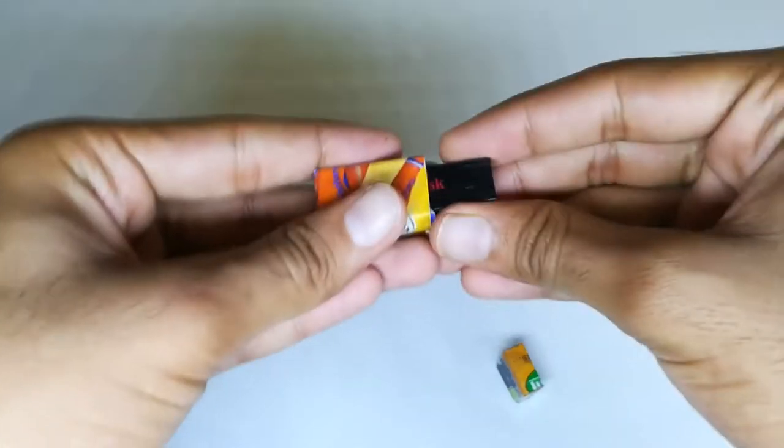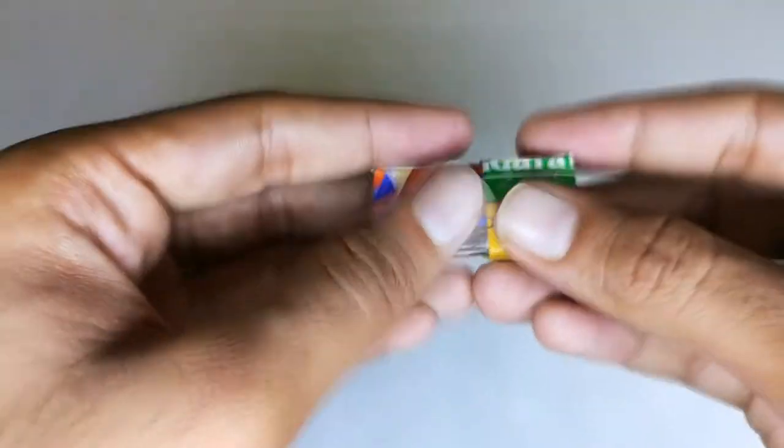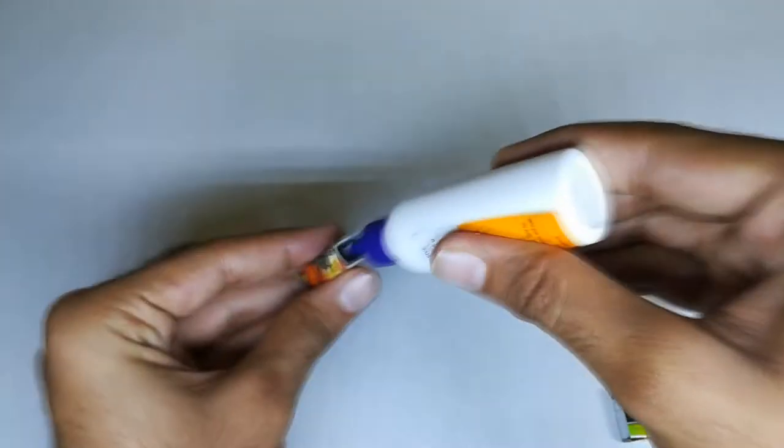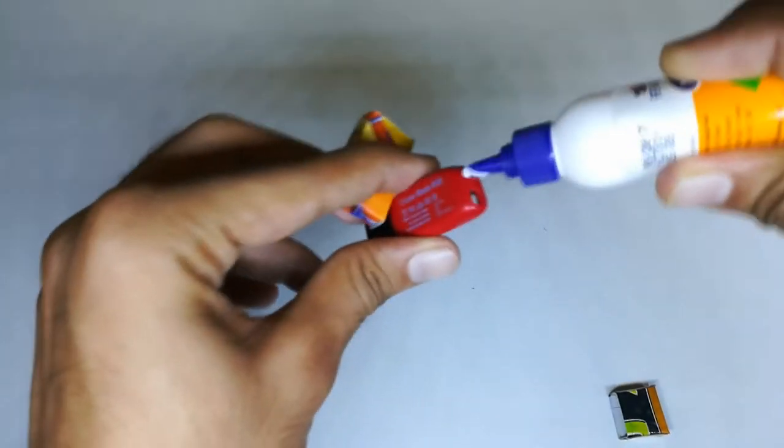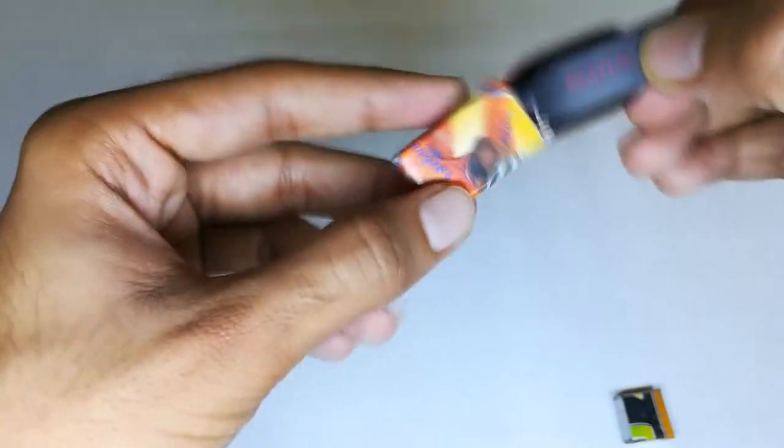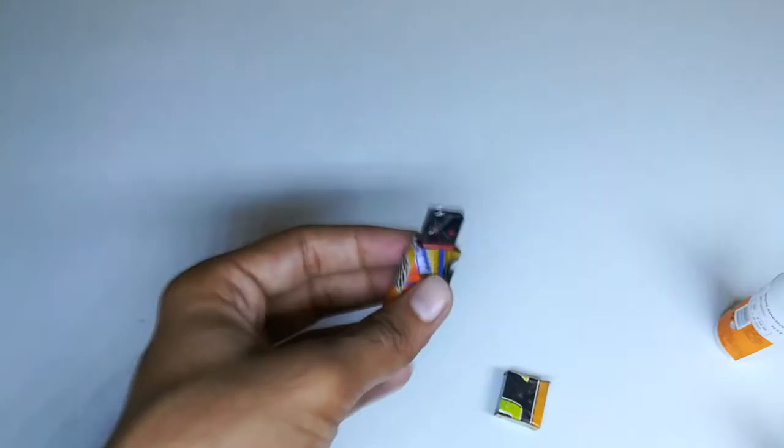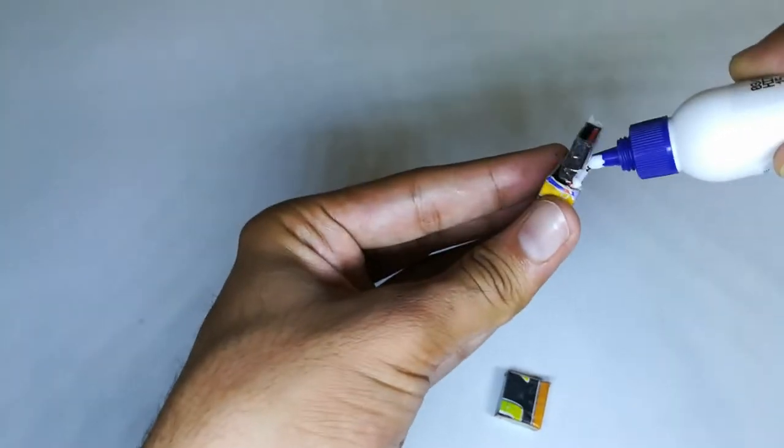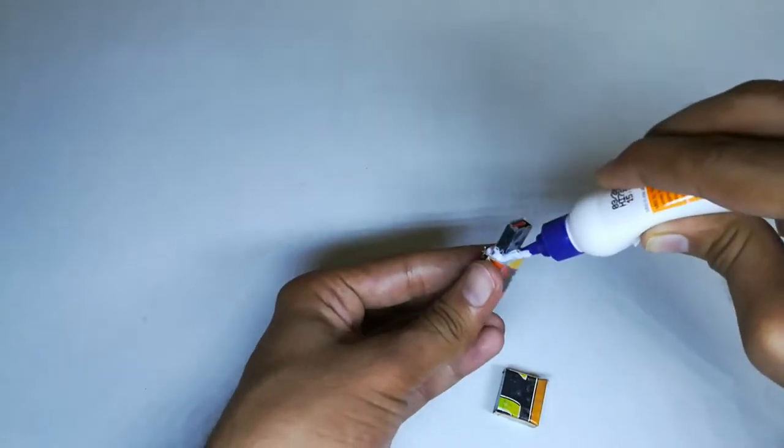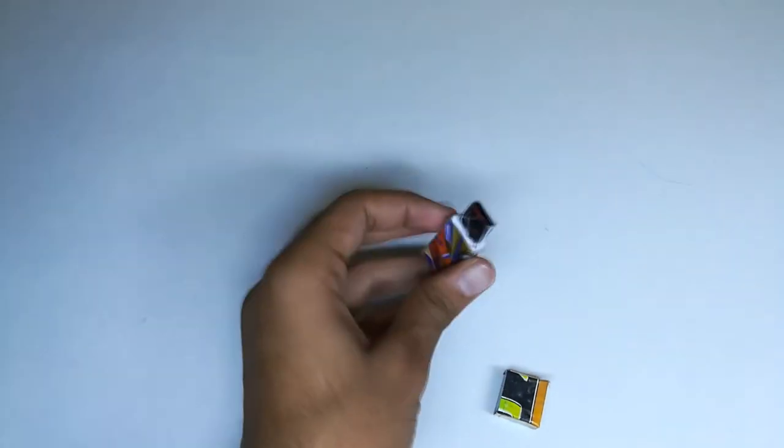So both the boxes are ready. Fit the pen drive inside it and check whether it fits properly, and if it does, stick it with the help of glue. I covered the upper part with sticky tape so that glue doesn't stick to it.